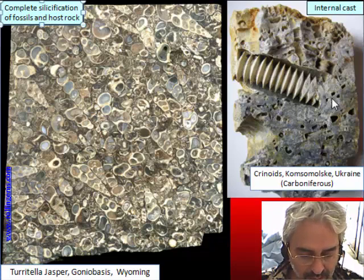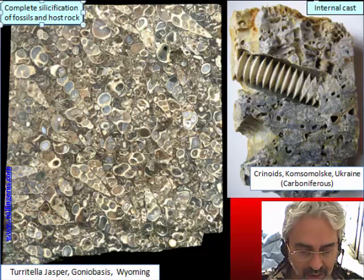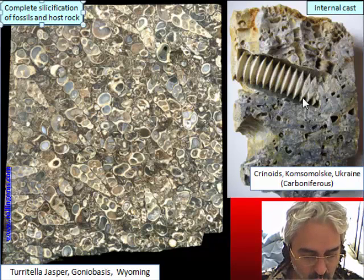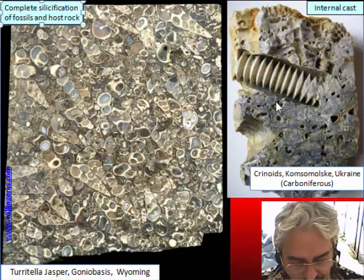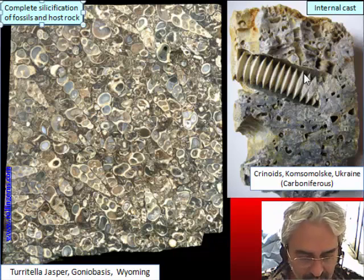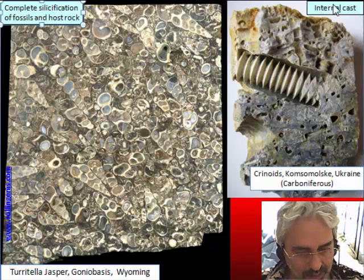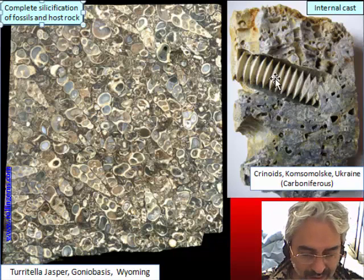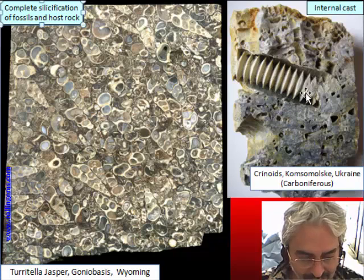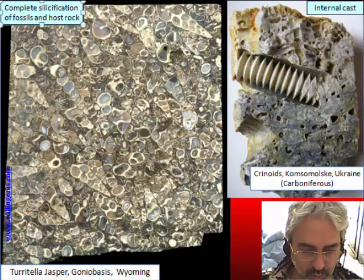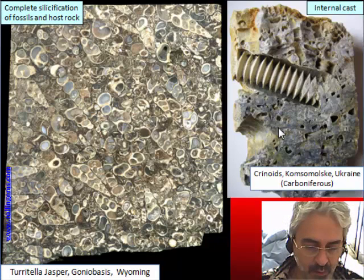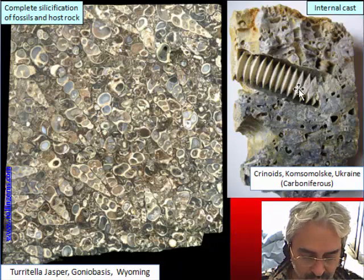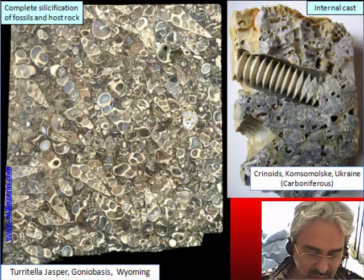Crinoids are animals living in water like lilies, like a flower. In the stalk they have a piece that looks like a screw. So this is a very strange fossil.